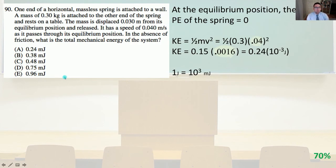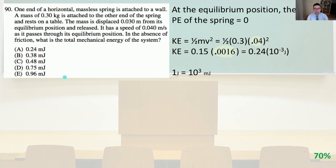Number 90. A mass of 0.3 kilograms on a spring is displaced 0.03 meters and released; it has a speed of 0.04 meters per second at the equilibrium position. At equilibrium, potential energy equals 0, so total mechanical energy equals kinetic energy equals one half mv squared equals 0.5 times 0.3 times 0.04 squared equals 0.5 times 0.3 times 0.0016 equals 0.00024 joules equals 0.24 millijoules. That is answer A.